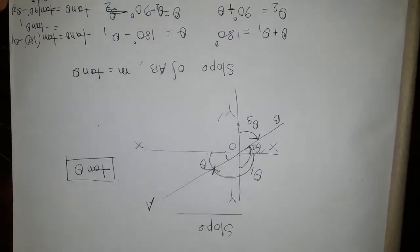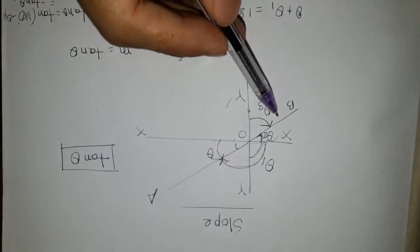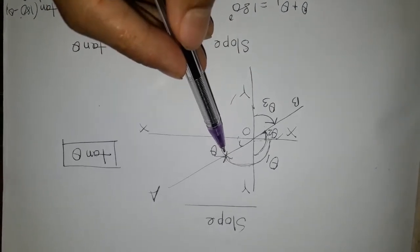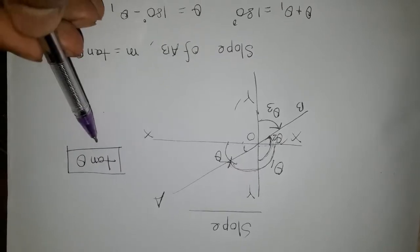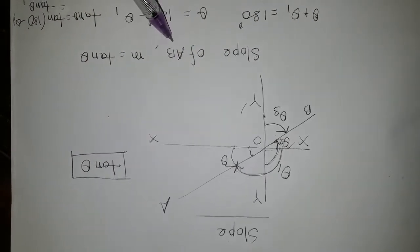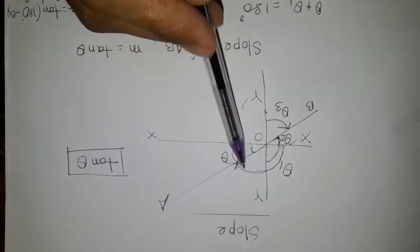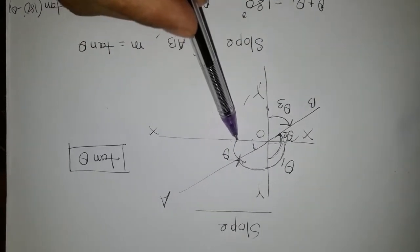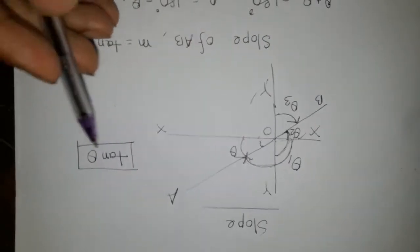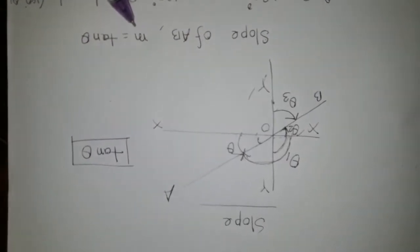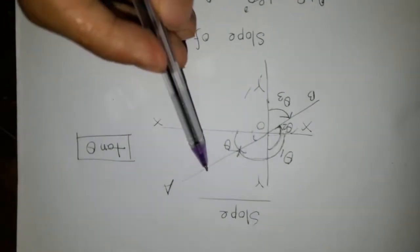Hello, welcome everyone. In this tutorial we're going to discuss slope. If any straight line AB makes angle theta with the positive direction of the x-axis, then tan of theta will be called the slope of AB. Typically, m equals tan theta. This is the x-axis and this is the y-axis. If that straight line AB makes angle with the positive direction of the x-axis, this is called tan theta, and this is called the slope of straight line AB.